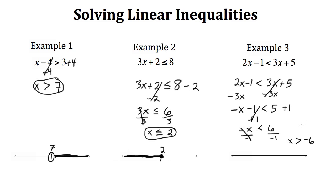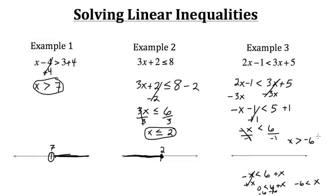Another way to understand why this happens: starting from negative x is less than 6, instead of multiplying or dividing, we add x to both sides. That gives us 0 is less than 6 plus x. Then subtract 6: negative 6 is less than x, or x is greater than negative 6 — the same result.